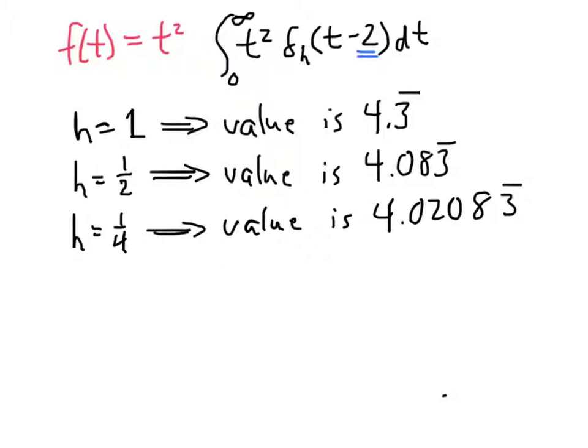So you can see that the values appear to be getting closer and closer to 4. And it looks like what we have going on is that the limit as h goes to 0 of the integral from 0 to infinity of t squared delta sub h of t minus c dt is 4.